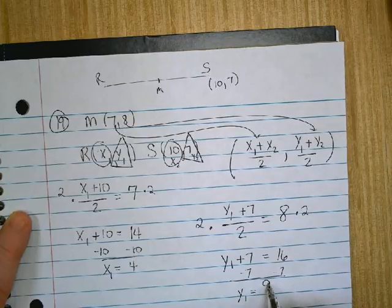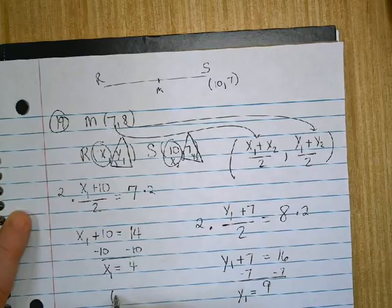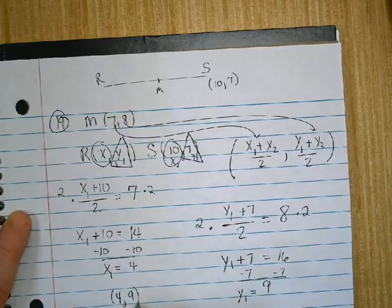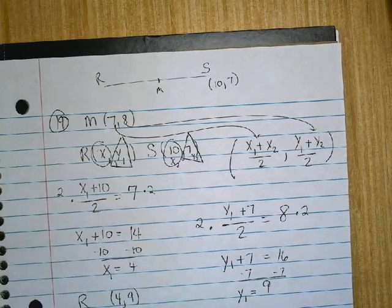Then you need to subtract 7. y sub 1 is 9. So R is located at (4,9). That's number 19.